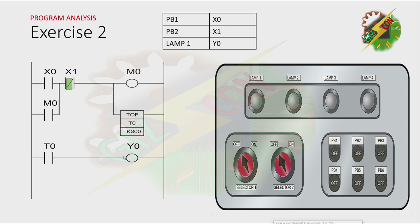Let's analyze this program first — this will be my answer. When we press PB1, X0 is energized, and that will cause M0 to activate. Because M0 is activated, all the contacts of M0 will be activated, and that will be a latching. And T0 here is a timer of delay — it will immediately activate.